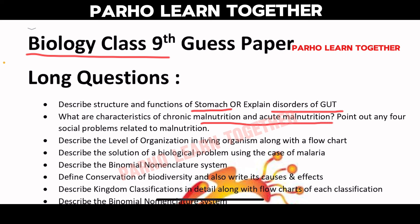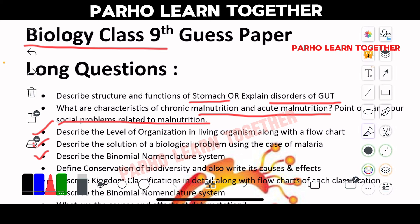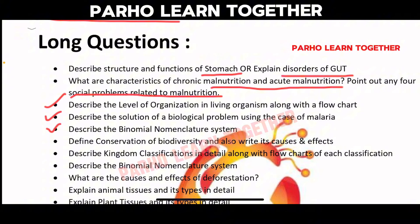Point out any social problem related to malnutrition — this is a long question. Describe the levels of organization in living organisms along with a flowchart — this is very important. Describe the solution of a biological problem using the case of malaria. Describe the binomial nomenclature.